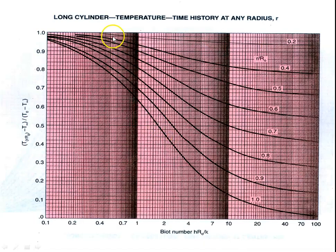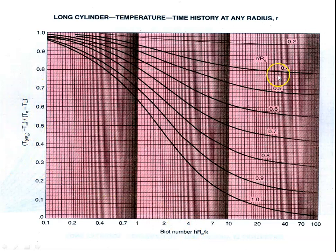This is the long cylinder temperature–time history at any given radius R. The x-axis is Biot number H·R₀/K, the y-axis is the temperature ratio, and the lines correspond to different values of r/R₀ from 0.2 to 1.0 — where 1 represents the outer surface and values near 0 represent positions near the center axis.